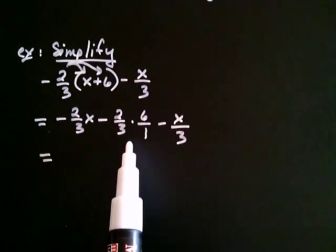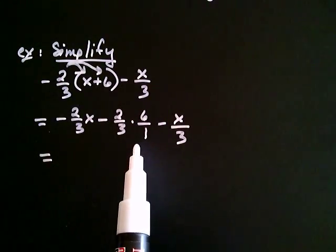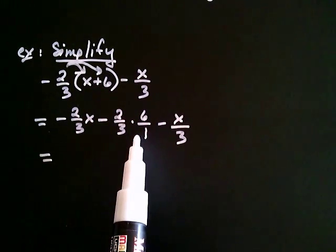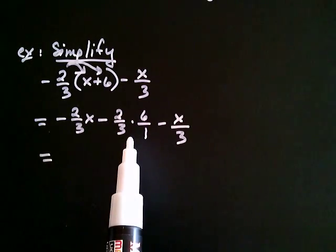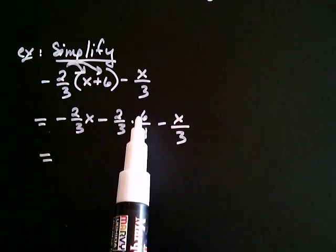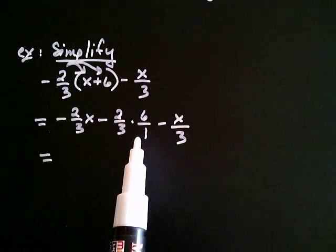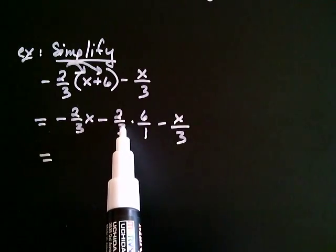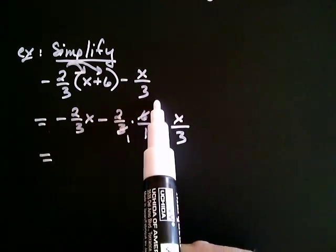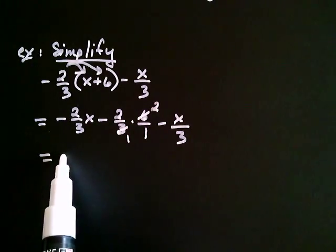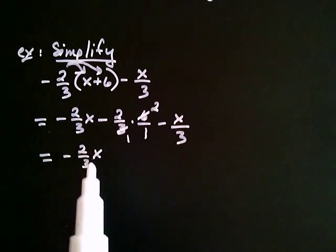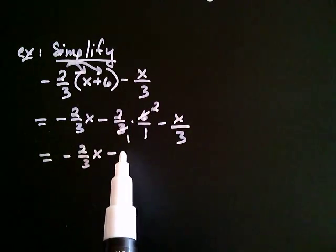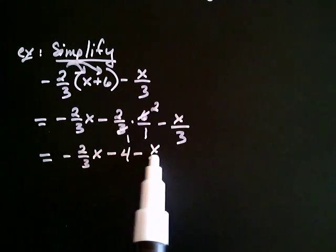Now let's multiply these two fractions together. You don't multiply straight across — you always look to see if you can do some canceling first, either vertically or diagonally. Three goes into both three and six: three goes into three once, and three goes into six twice. So I have negative two thirds x, and then minus — two times two is four over one — so minus four, minus x over three.